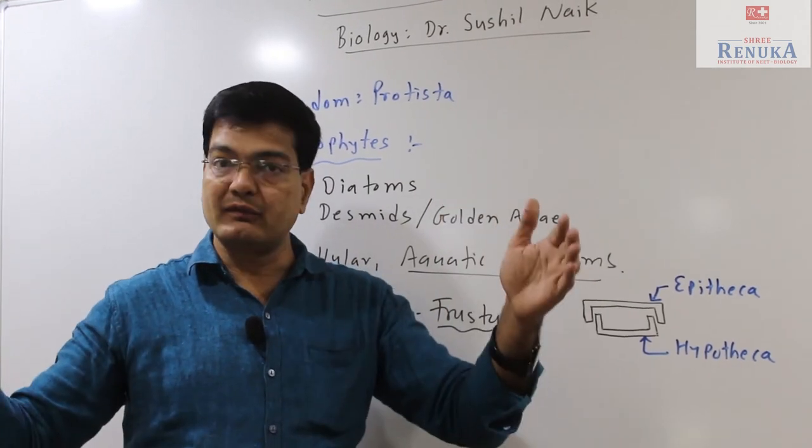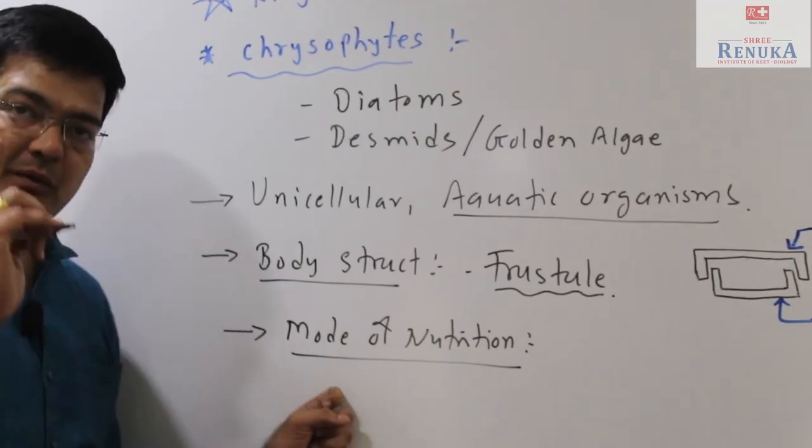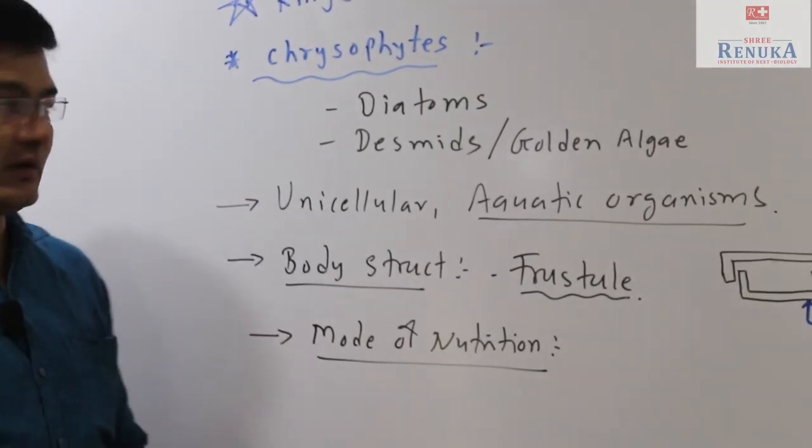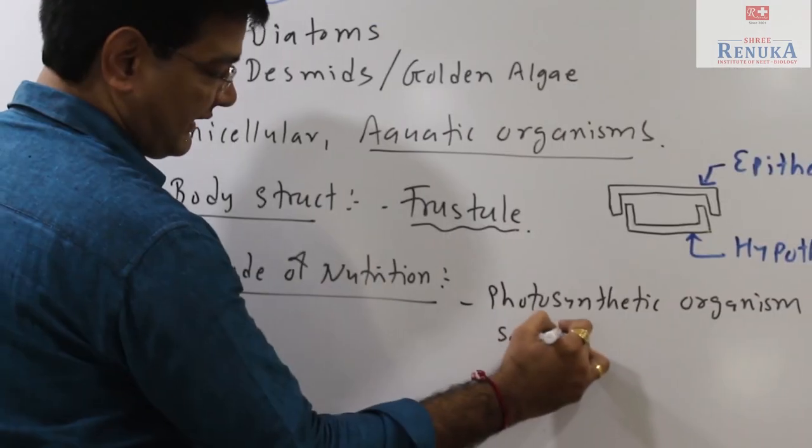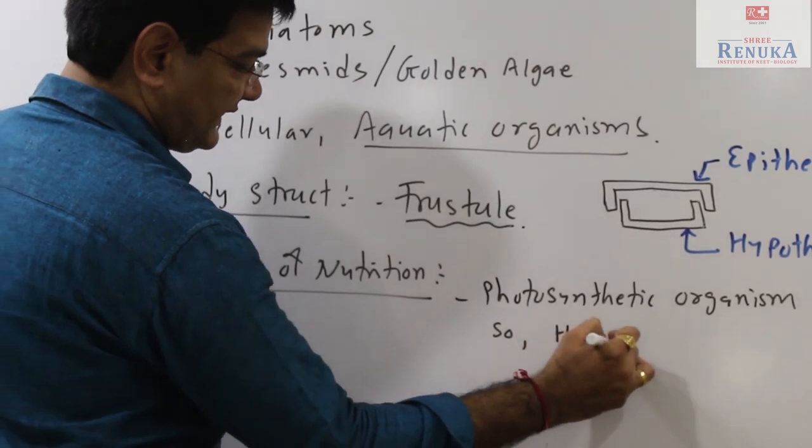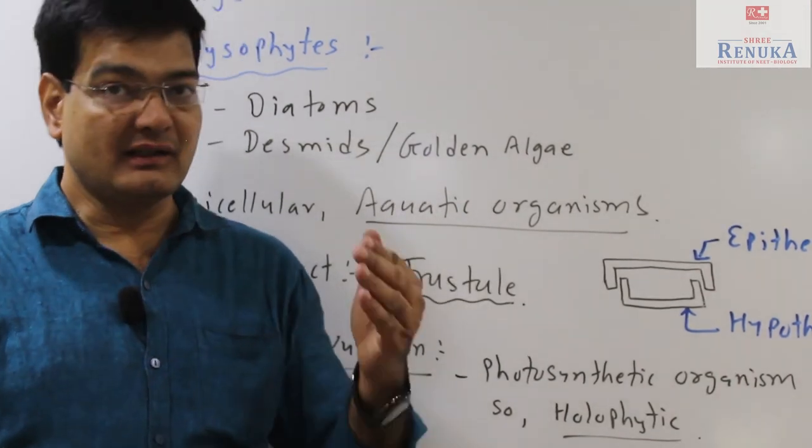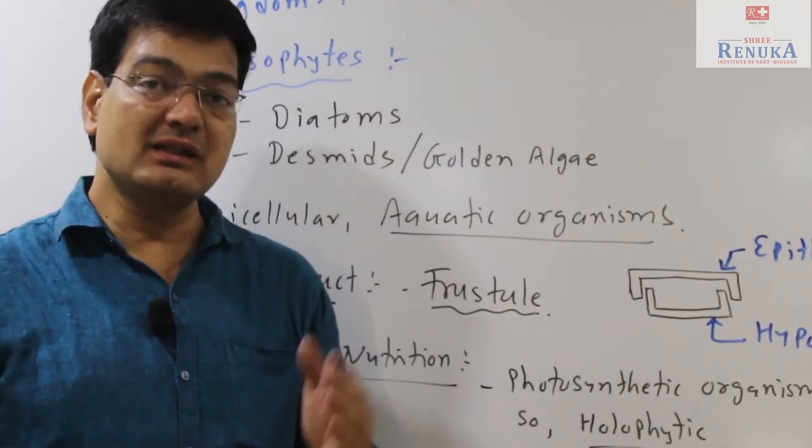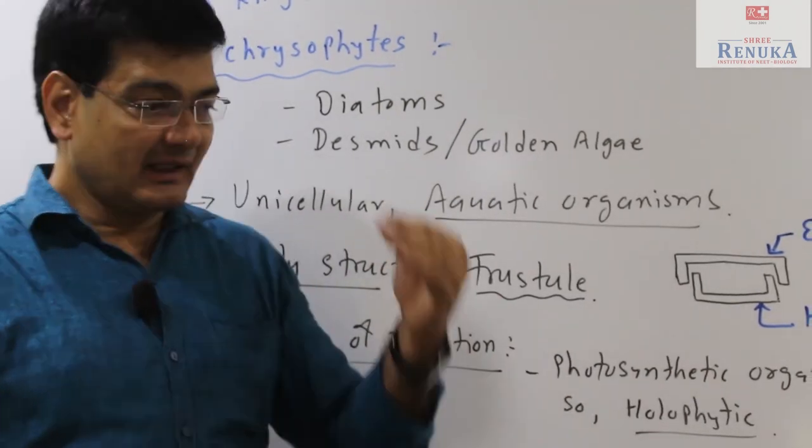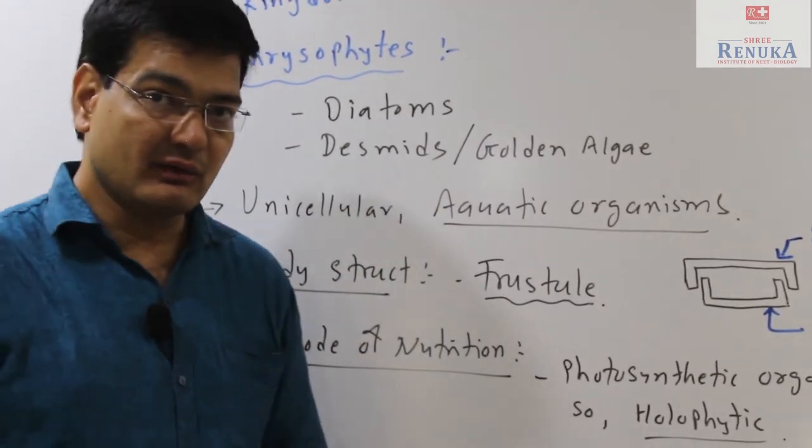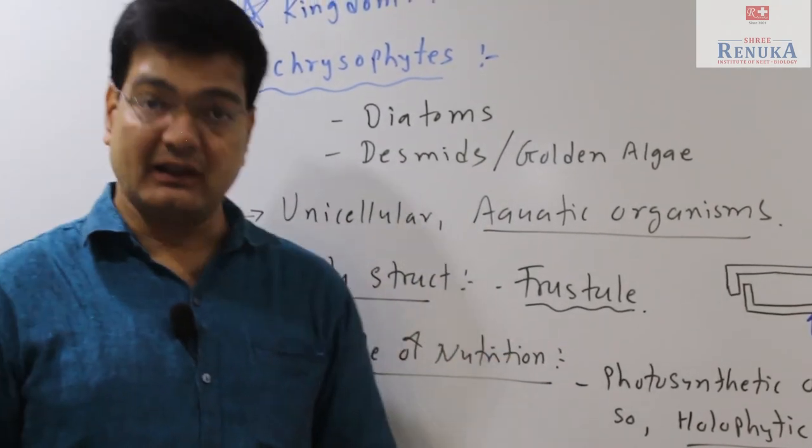Now talk about mode of nutrition in the case of chrysophytes. Mostly they are photosynthetic, they are holophytic. Remember that due to their ability of photosynthesis, the diatoms are considered the chief producers of the oceanic region. Some dinoflagellates like desmids are also found to be holozoic in their mode of nutrition, and some are saprotrophic as well.